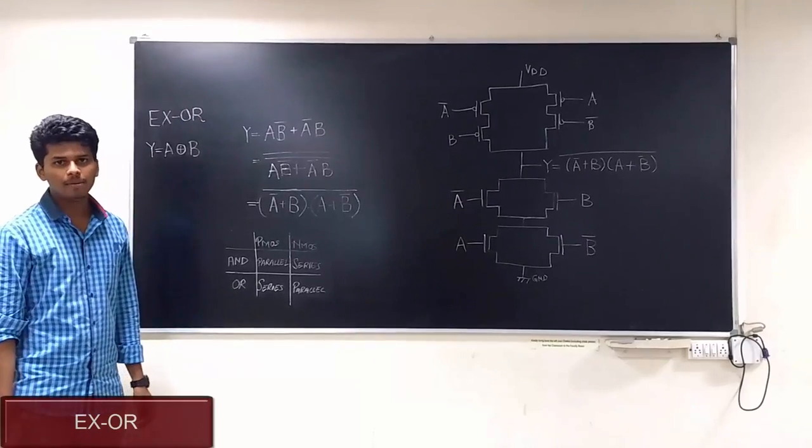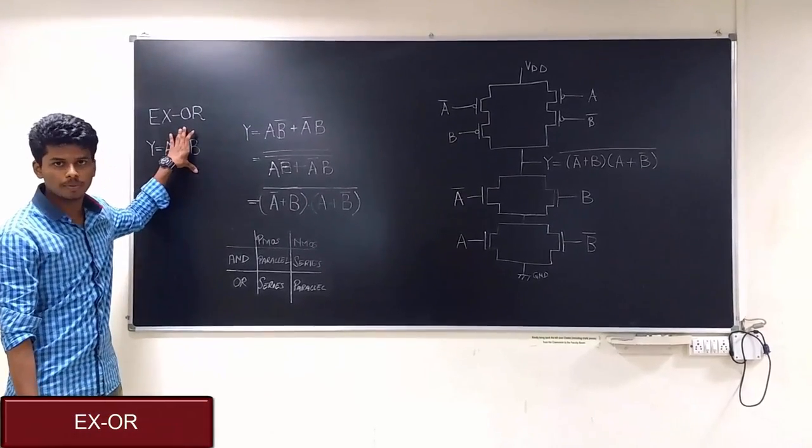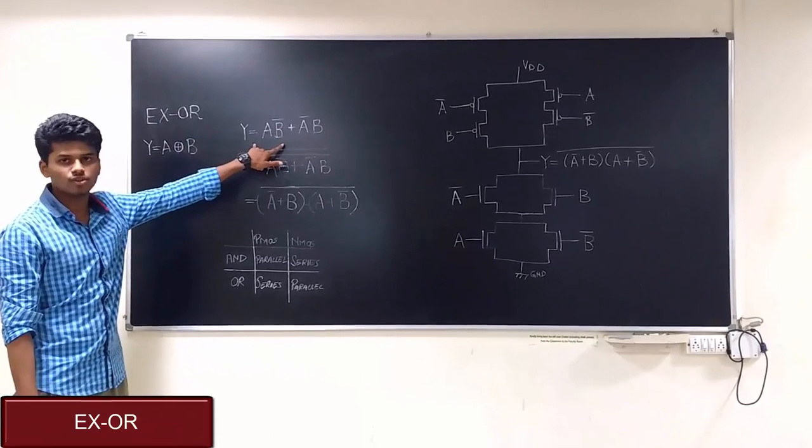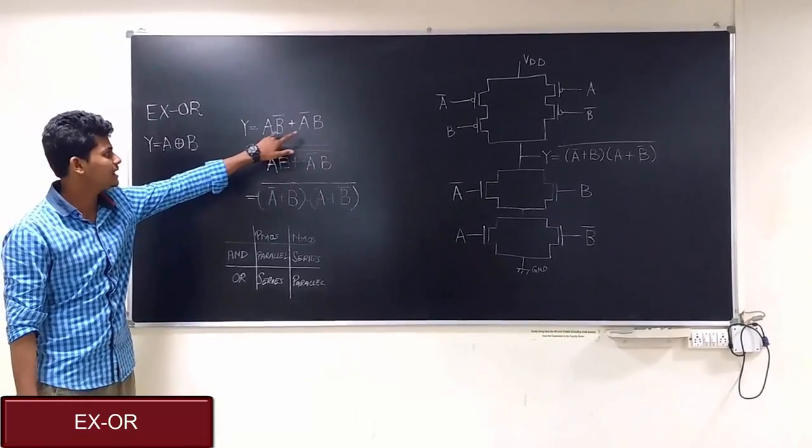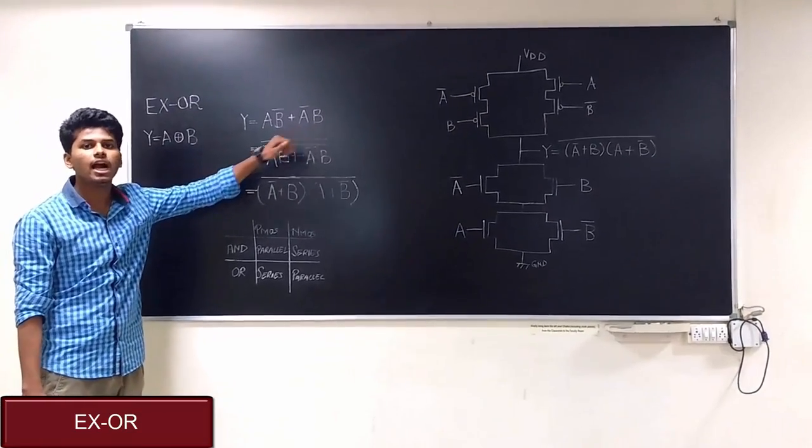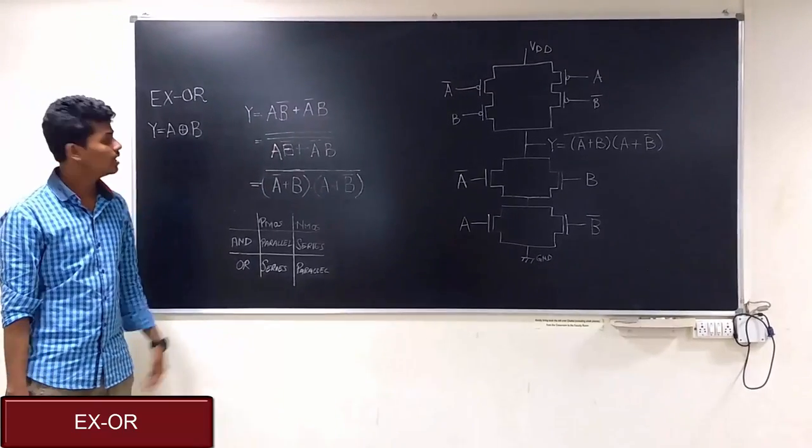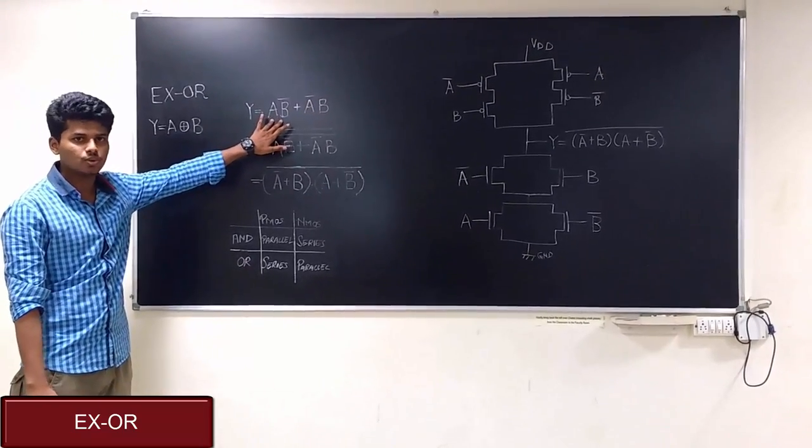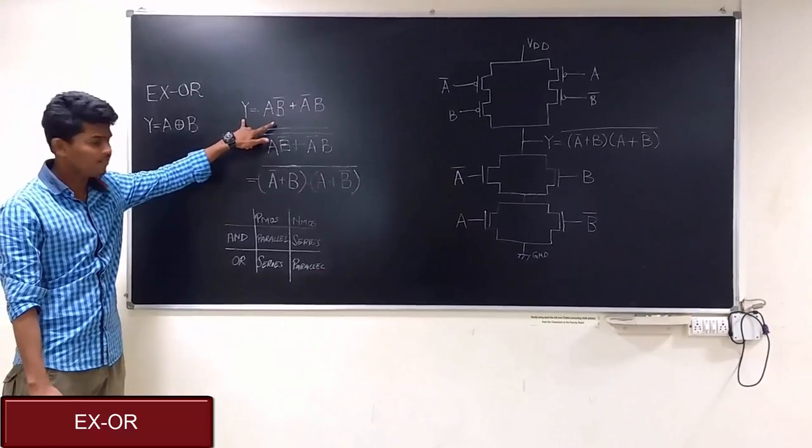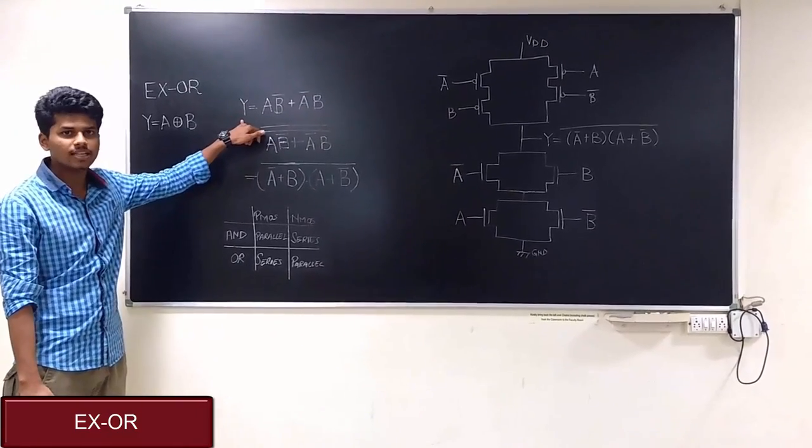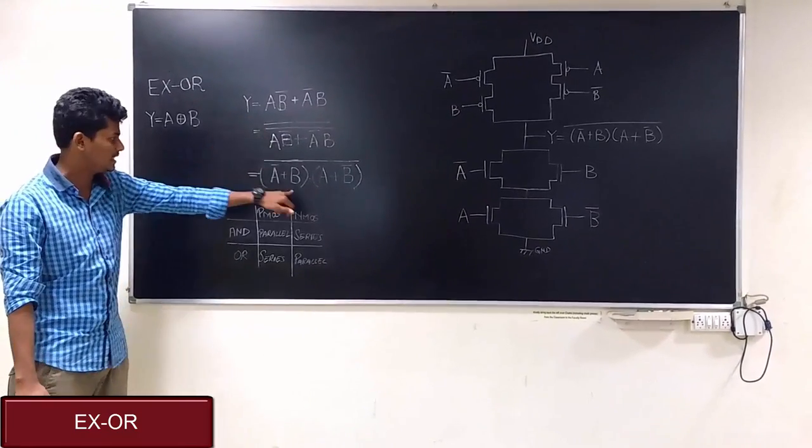Welcome to the LSI lab. Today we will be looking into XOR operation. Here we can see the XOR equation as AB bar plus A bar B. But we know that the output of CMOS is always inverted. That's why we will invert this equation twice so as to get Y itself. So the final equation that we would be using for CMOS implementation is this.